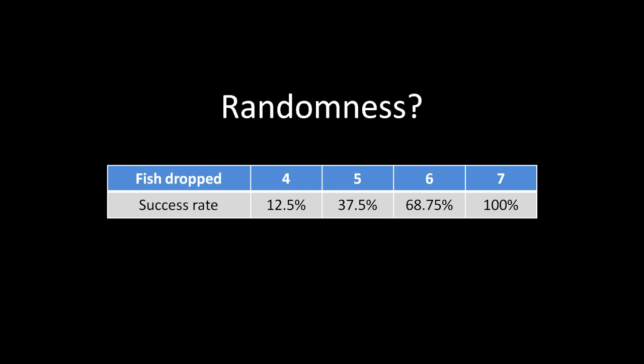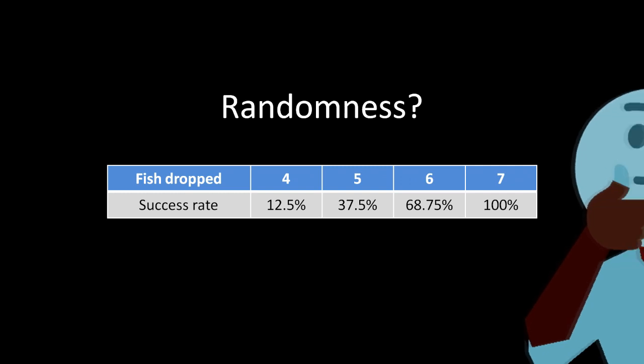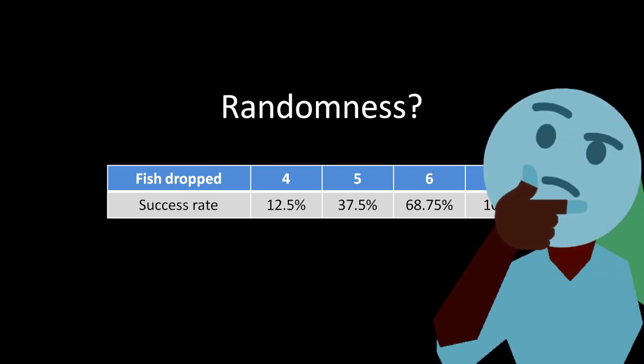The marine lab heart piece in Majora's Mask is commonly thought to be decided by RNG, where each fish in the tank has an equal chance of catching any fish that you drop into the tank. If that's the case, then this table just shows the probability of completing the mini game after dropping a certain number of fish. So we have to ask: is it really random?